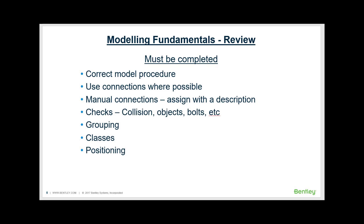We use connections wherever possible. If we have to use manual connections then we assign the connection — like the cleats, the connection objects — with a description so that when we detail them, ProSteel knows what to do with them. We do our collision checks; I quite often do a 10% check on my objects, bolts, and connections just to make sure everything's okay. From there we do our grouping, check our classes, and make sure we use a correct positioning sequence. From there we're ready to get into the automatic detailing, and everything becomes quite easy after that.